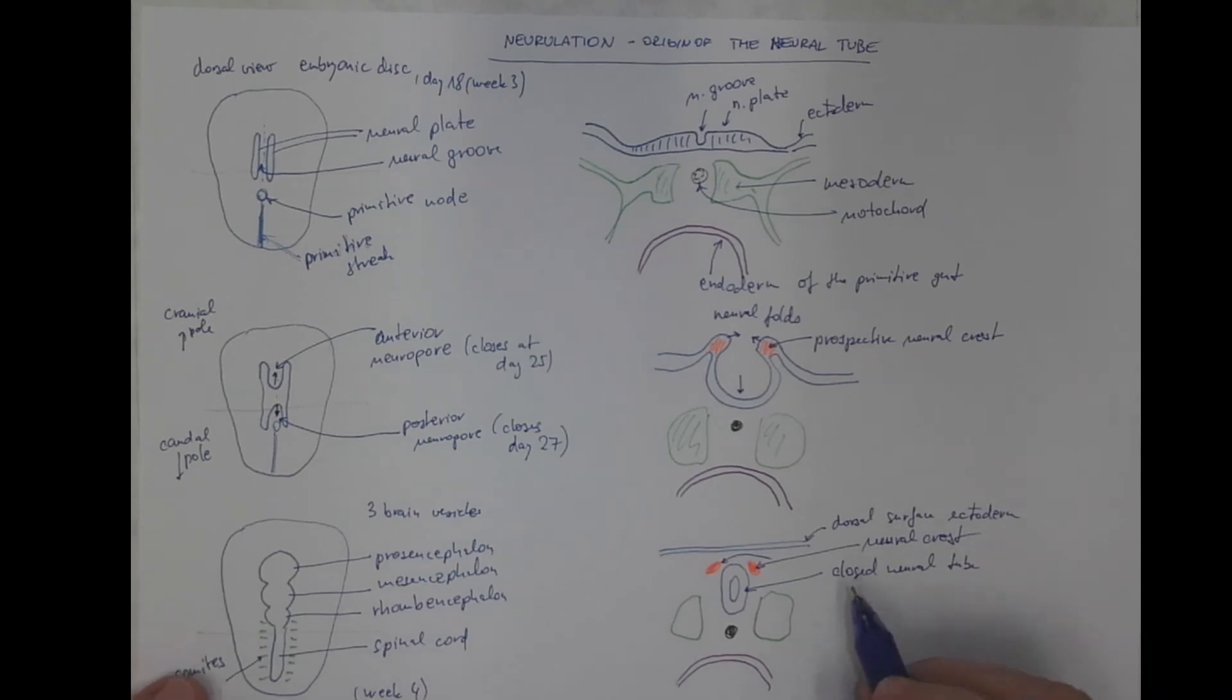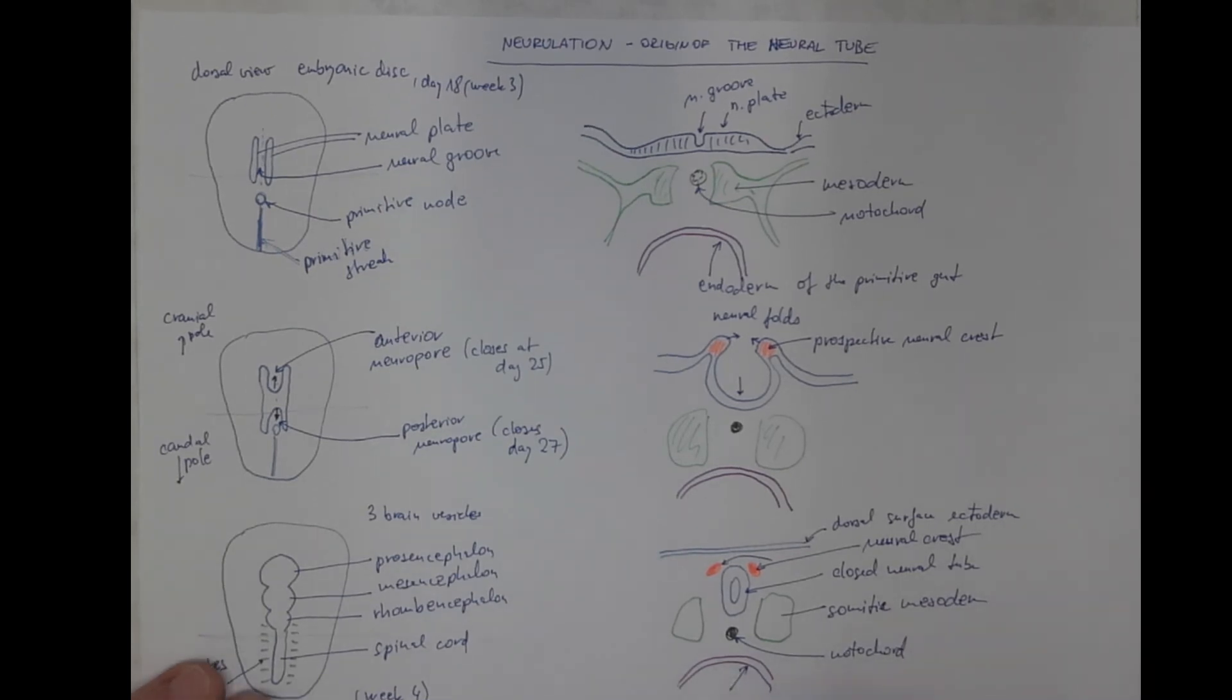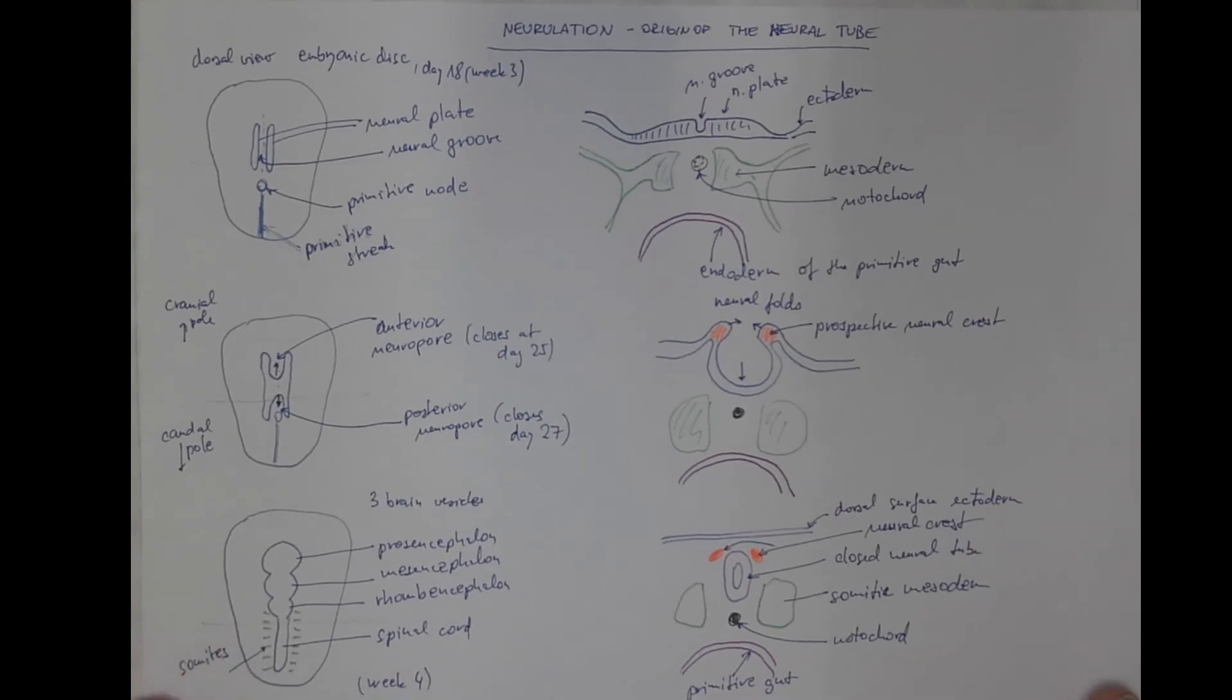And these are the somites, the somatic mesoderm, the notochord, and the primitive gut, which is lined with the endoderm.